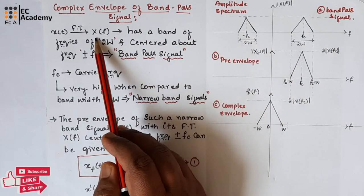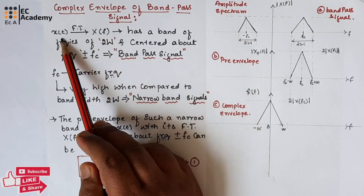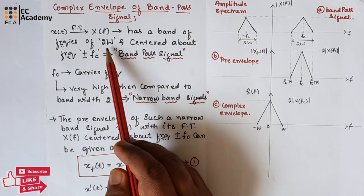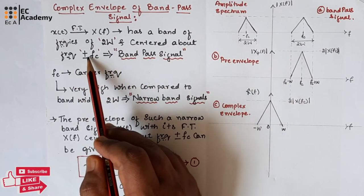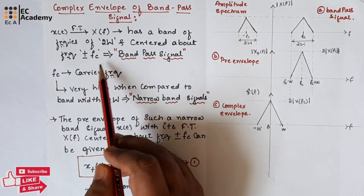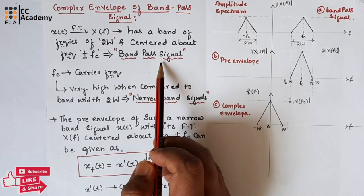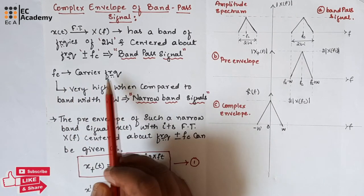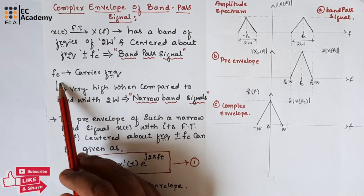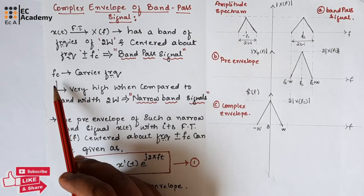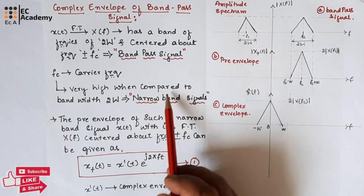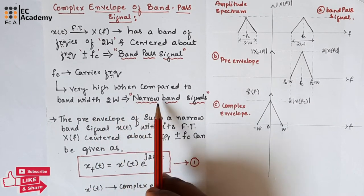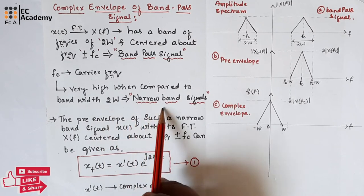If we consider a Fourier transform X of F of signal X of T that has a band of frequencies of 2W and it is centered about the frequency plus or minus Fc, the signal is known as a band pass signal. Here, Fc is the carrier frequency. In most of the cases, Fc, which is the carrier frequency, is very high when compared to bandwidth 2W. Therefore, such signals are known as narrow band signals.